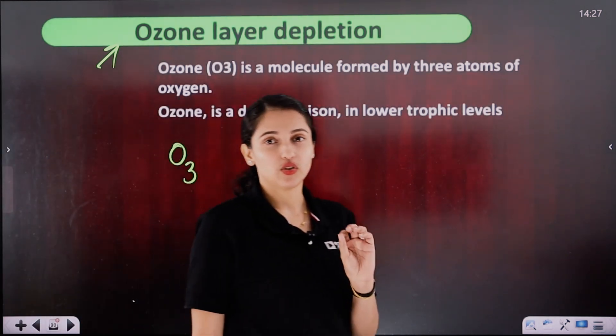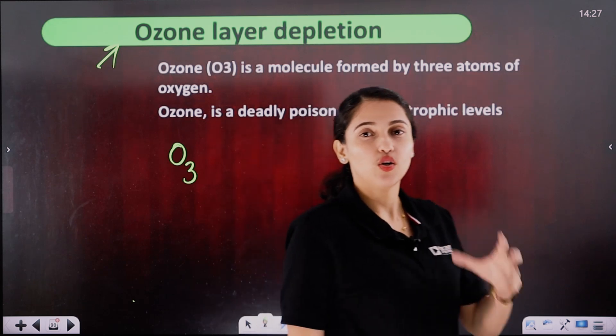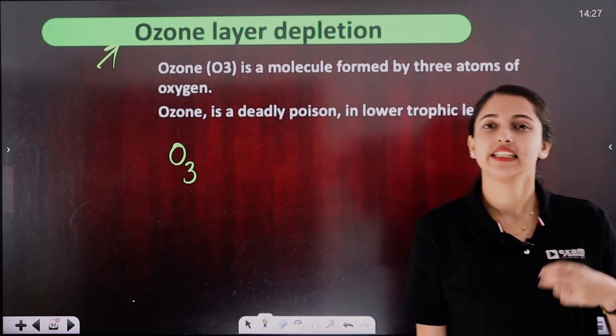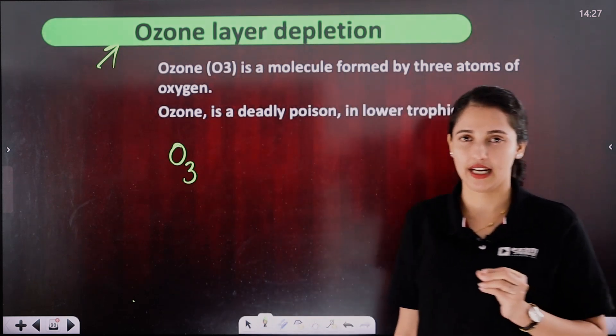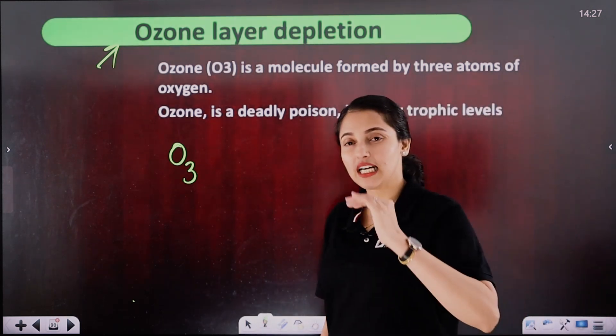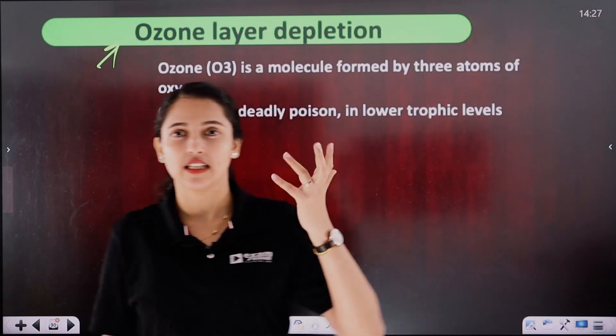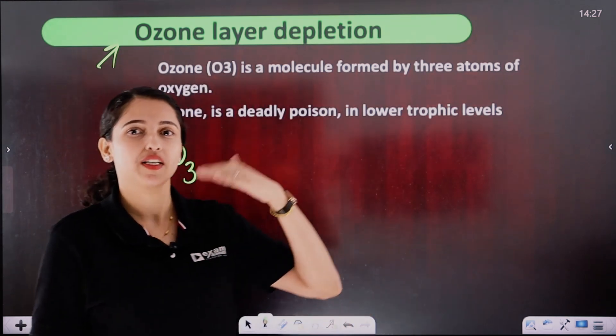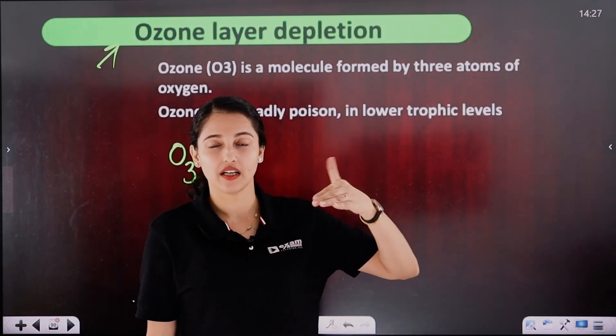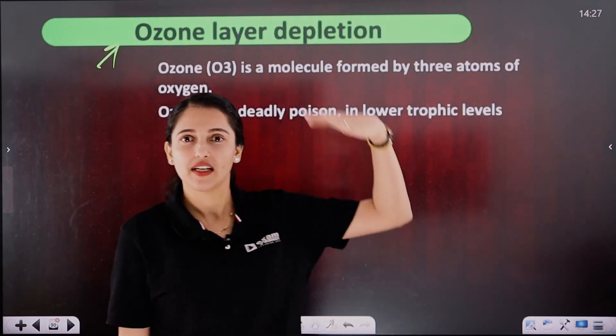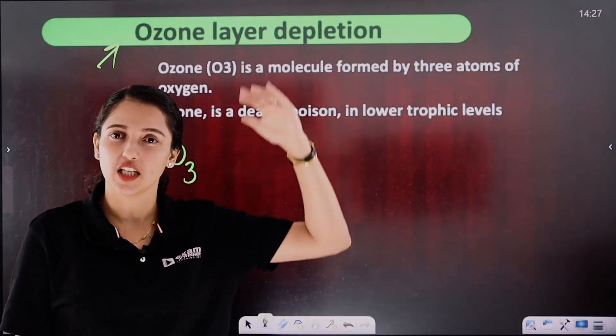This ozone is effective in one atmospheric layer. The atmospheric layers are: troposphere, stratosphere, mesosphere, ionosphere, etc.